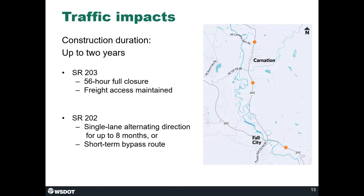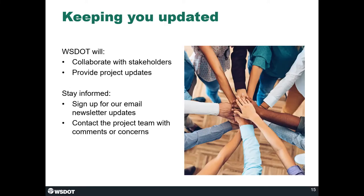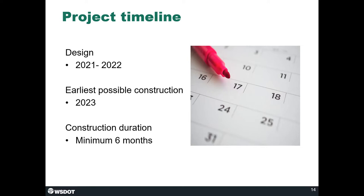On SR202 at Skunk Creek, there are a couple of potential options. The work could be completed by reducing SR202 to alternating single-lane traffic for up to eight months, or the design-builder could look into building a short-term bypass route using Southeast Fish Hatchery Road. Starting in 2023 at the earliest, this project is combined into one design-build contract with fish passage projects on I-90 near Bellevue and SR161 near Federal Way, so the construction window is quite lengthy.